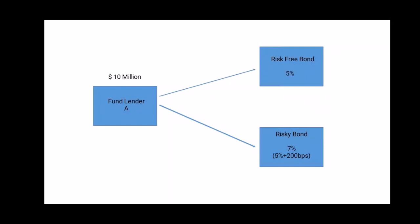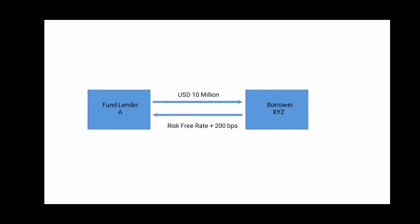Corporate debt bonds come with the risk of default. Assume that fund house A goes with the second option and buys the risky bond, which gives 200 basis points extra yield. You may assume this fund house is a hedge fund and the bond issuer is Thomas Cook. The spread is 200 basis points, or 2%. A basis point is one-hundredth of a percent. Spread is the extra yield earned by the investor in a risky asset over the risk-free rate.